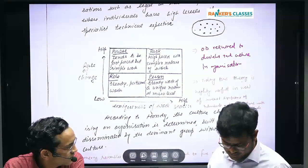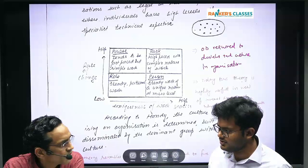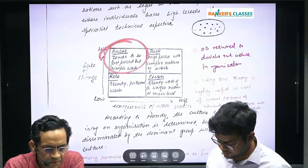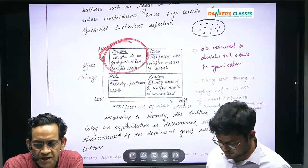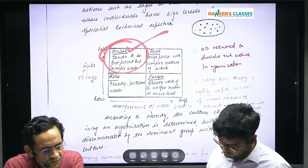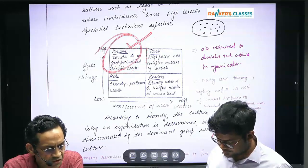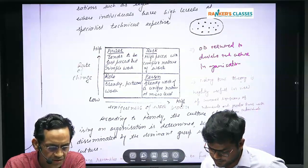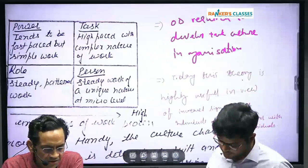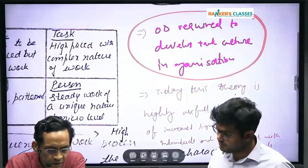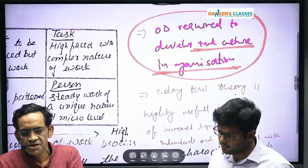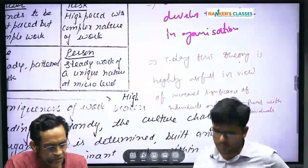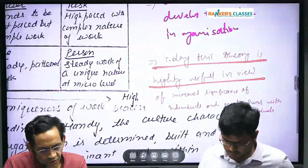Merits can be written: high power culture cannot be applied everywhere. For example, in a hospital, high power culture is not useful; it is useful in military organizations, PMO, or decision-making bodies. Another important point: organization development is required to develop task culture, because ultimately organizations survive and get success through task culture.